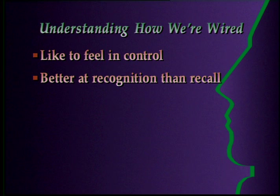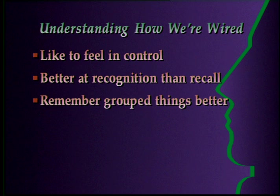A third important aspect is that we process and retain information better when it is grouped — when information is broken down into smaller units, it's much easier to deal with. For example, think of everyday numbers like your phone number or social security number. We remember large sequences because the numbers are broken into smaller segments. Grouping also affects our perception — try to visualize a dozen apples. It's easier to do it as groups of three or four.